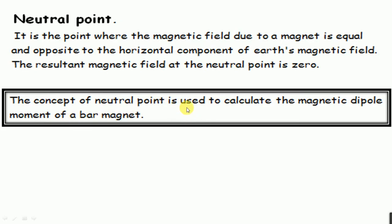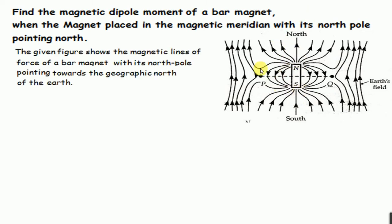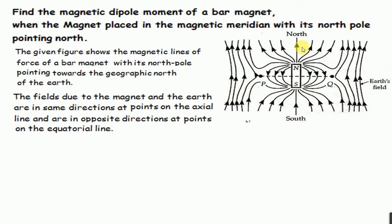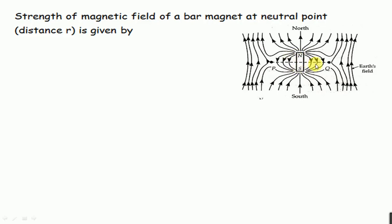Now we'll derive the position of the neutral point for a bar magnet with its north pole facing north. At the axial line, the magnetic field lines of the earth and of the magnet are in the same direction, so they cannot cancel each other. But at the equatorial line, the field lines of the bar magnet and of the earth are in opposite directions, so at some point we have zero magnetic field. Let r be the distance of the neutral point from the center of the magnet, 2l be the length of the magnet, and m be the magnetic dipole moment.